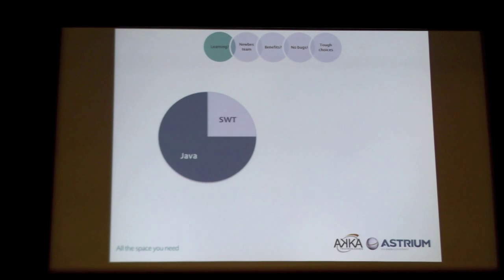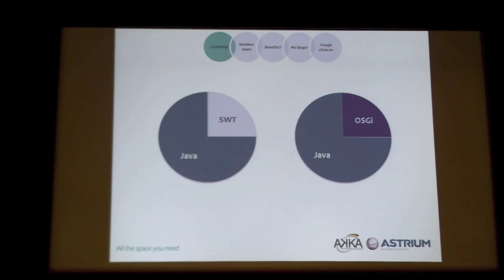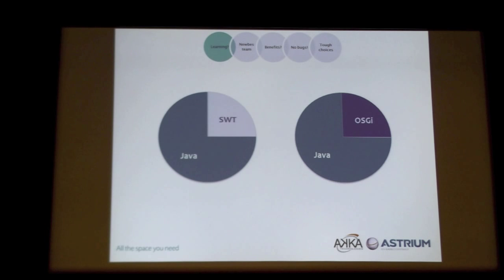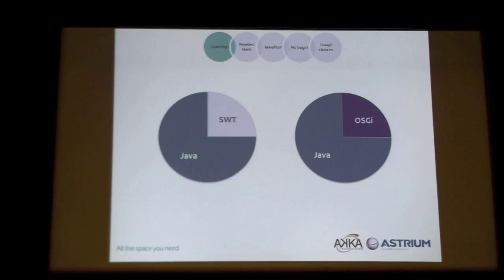Eclipse RCP is based on Equinox, and Equinox is an OSGI container. The most important thing is to learn OSGI and understand the ideas behind it. Then learning SWT, GFace, and so on will be really easy. If you don't learn OSGI, you will have a lot of trouble — no module resolution, circular dependencies, and so on. The easiest but worst solution is to put all your classes into one big plugin, and two years later you have a real mess that you cannot untangle.